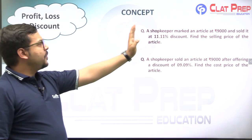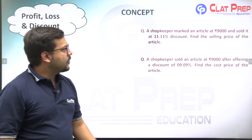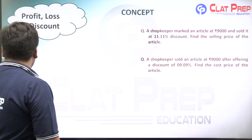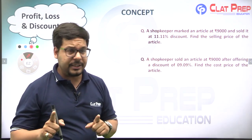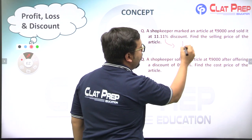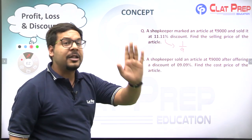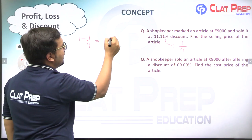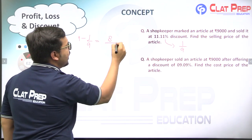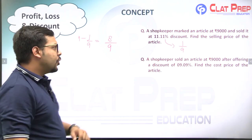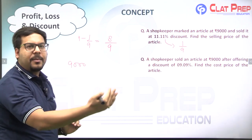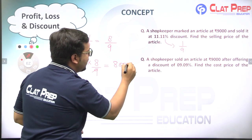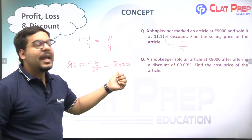Example 5: A shopkeeper marked an article at ₹9000 and sold it at 11.11% discount. Find the selling price. 11.11% = 1/9. Multiplying factor = 1 − 1/9 = 8/9. Selling price = 9000 × 8/9 = ₹8000.